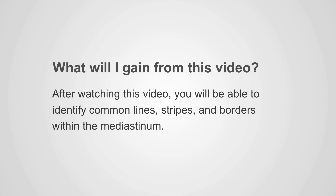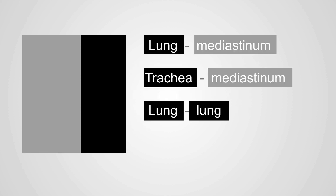After watching this video, you will be able to identify common lines, stripes, and borders within the mediastinum. An X-ray interface requires two significantly different radiological densities to be touching. Within the mediastinum, we have interfaces that are formed between the lung and the mediastinum, between the trachea and the mediastinum, and between the lungs themselves.